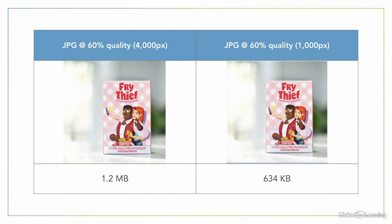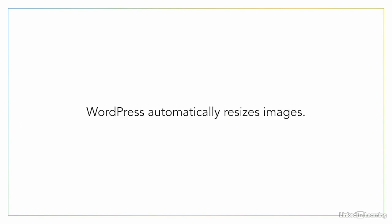If we want to reduce this further, we could also reduce the size of the image, meaning we could shrink it from 4000 pixels down to 1000 pixels at the same quality, and that would shrink the image down to 634 kilobytes — which saves about 50% of the space. Lucky for us, WordPress will automatically resize images when we upload them, so unless you want an image to be a very specific size, you shouldn't have to resize them manually.